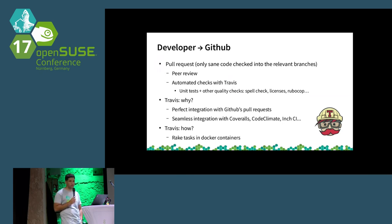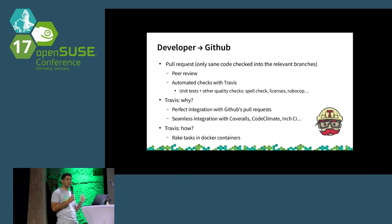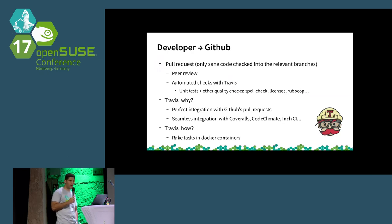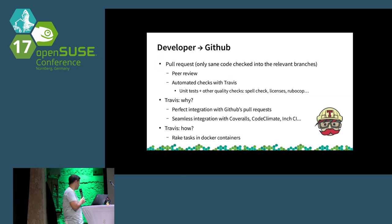For all that automation we use Travis, which is a service that integrates very well with the pull request mechanisms that GitHub has on one side, and on the other side integrates very well with other services that provide added value. We also use many of those services.